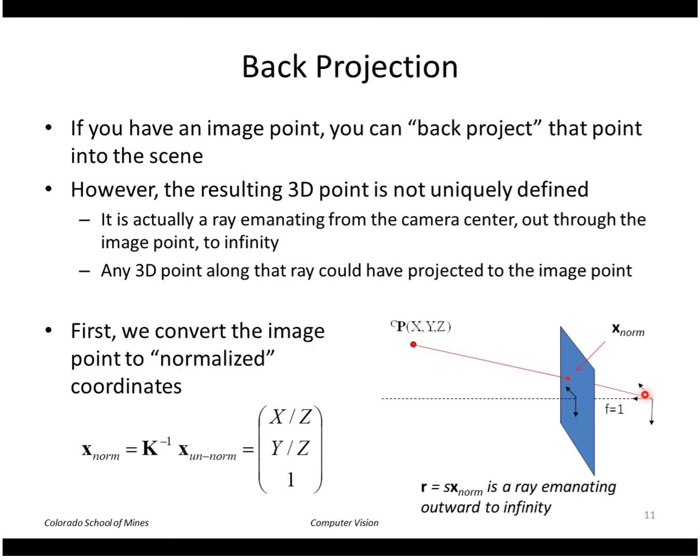So what you can do is compute the ray that comes from the camera center out through the image point to infinity. So any 3D point along that ray could have projected to the image point. Here is the camera center, here's the image point, and this is the ray passing through that. To do this, to compute this ray, we find the normalized image coordinates of our point. So we take our pixel location in the image, multiplied by the inverse of the camera calibration matrix, and that gives us normalized image coordinates.